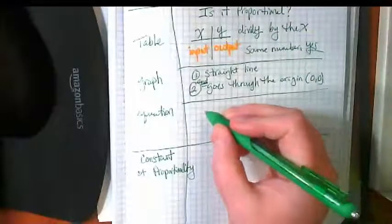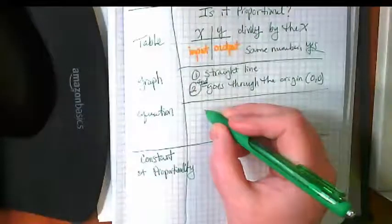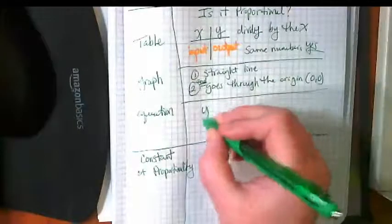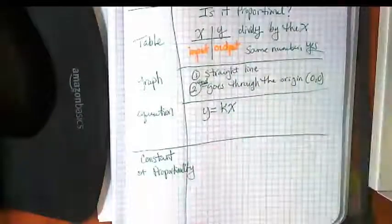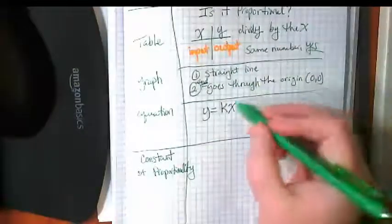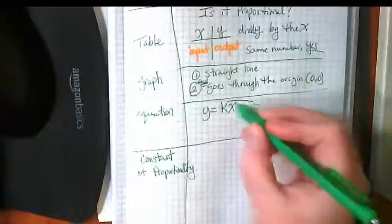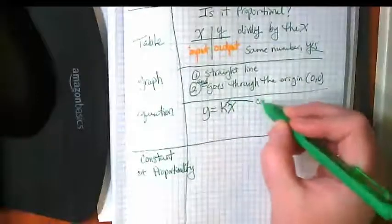Who caught what the equation is? Y equals kx, y equals kx. This k is the constant of proportionality.